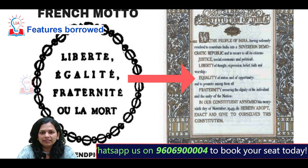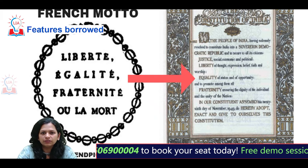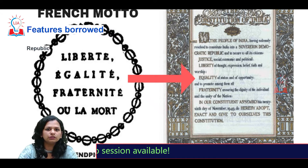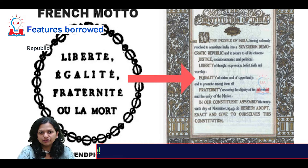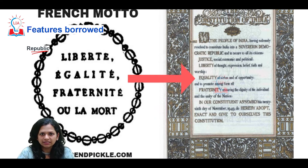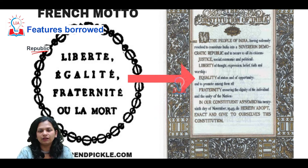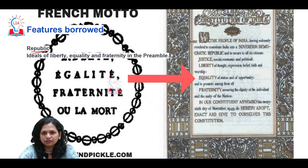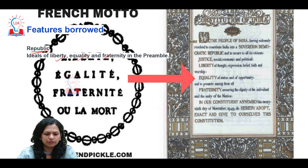We will start by discussing the important influences that the French constitution has had on the Indian constitution. India has borrowed the principle of making India a republic — the Indian president, the elected head of state, is elected through indirect election. This concept of having an elected head of state is something that has been taken from the French constitution. India also borrowed the very important principles of liberty, equality, and fraternity from the French constitution and inserted them into our preamble.